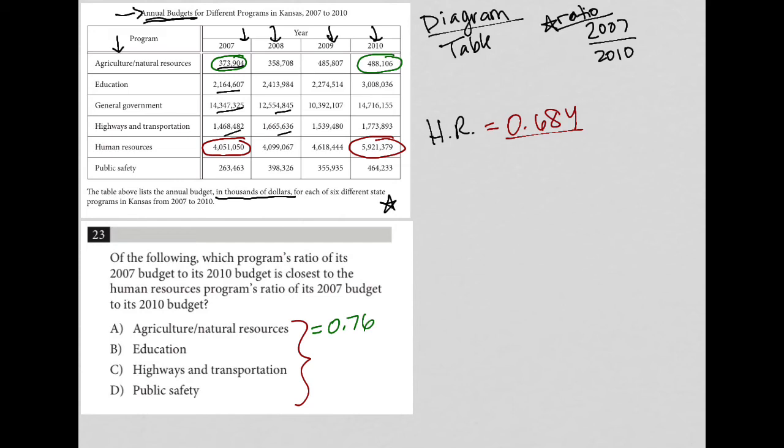So for education, I have these two numbers here. So I'm going to put that in my calculator. 2164607 divided by 3008036. And that gives me 0.72. So I'm already going to cross that out because 0.72 was closer to 0.684. Don't forget, that's what we're trying to figure out.